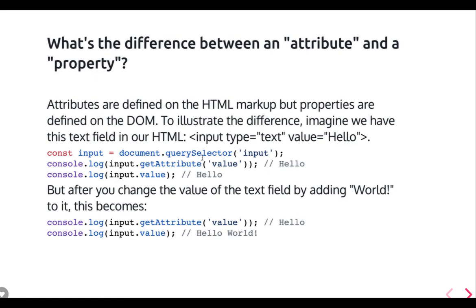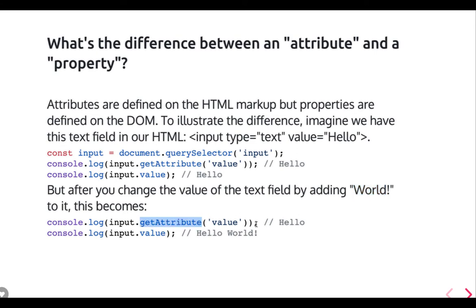What is the difference between attribute and property? For example, with an input type text field — if you do document.querySelector('input') and then get either getAttribute('value') or input.value, both will give you 'hello' because the value represents 'hello'. But when you change the text field and add the value 'world', getAttribute('value') will still point to 'hello' while input.value will give you the exact current result, which is 'hello world'. This is a bit unusual, but that is how it works.